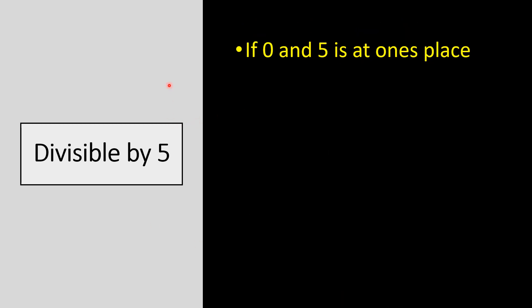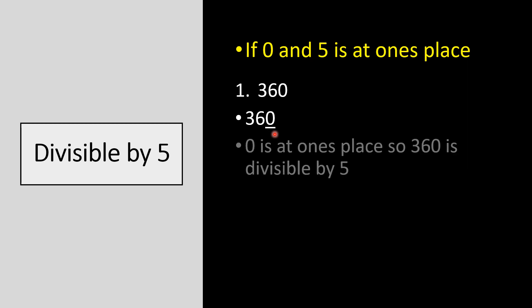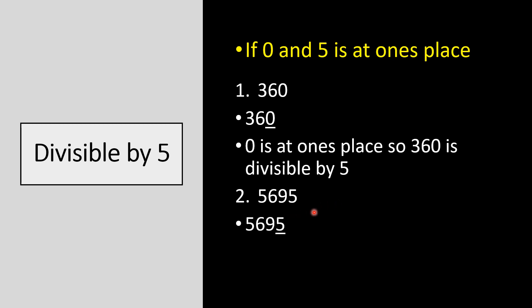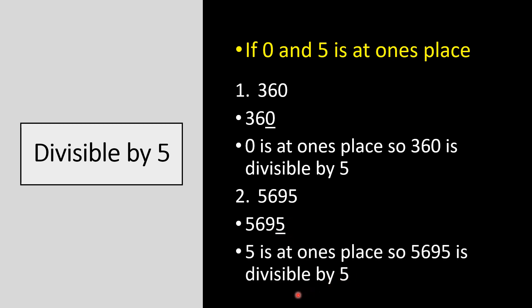Divisibility rule for 5: if 0 or 5 is at the ones place, then the number is divisible by 5. Always remember — it is very easy. For example, 360 has 0 at the ones place, so 360 is divisible by 5. Another example: 5695 has 5 at the ones place, so 5695 is divisible by 5.